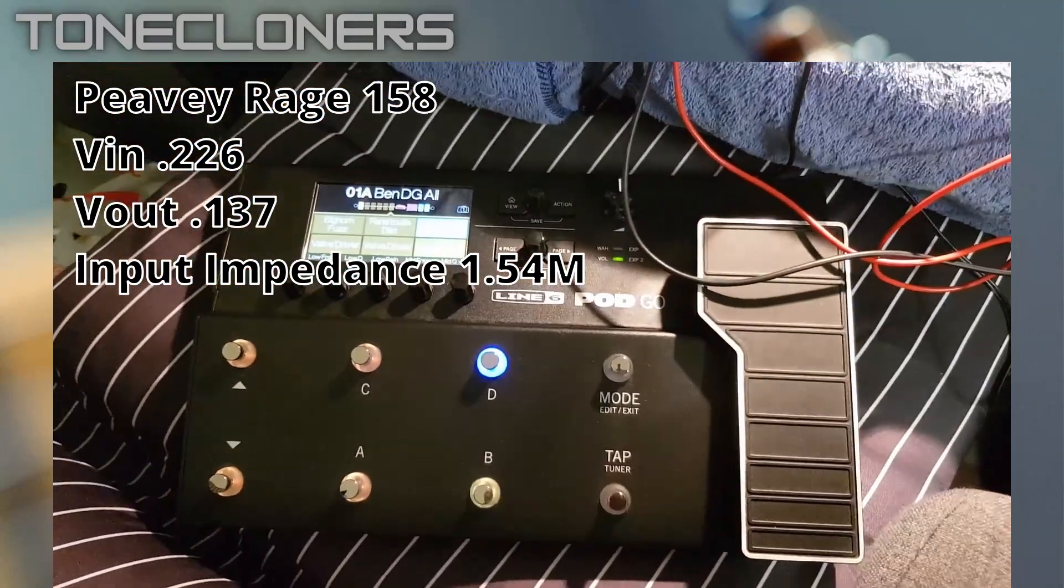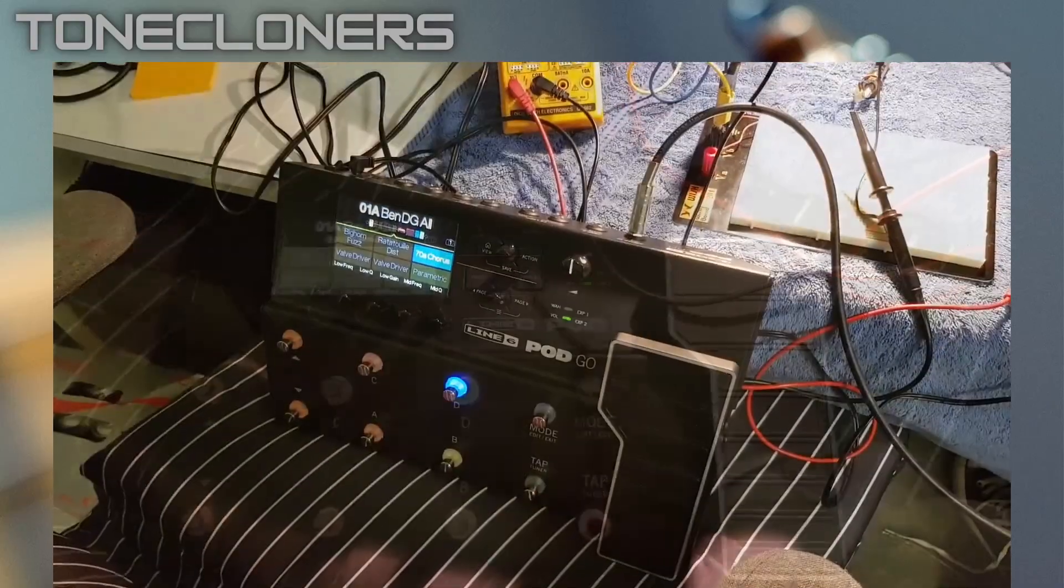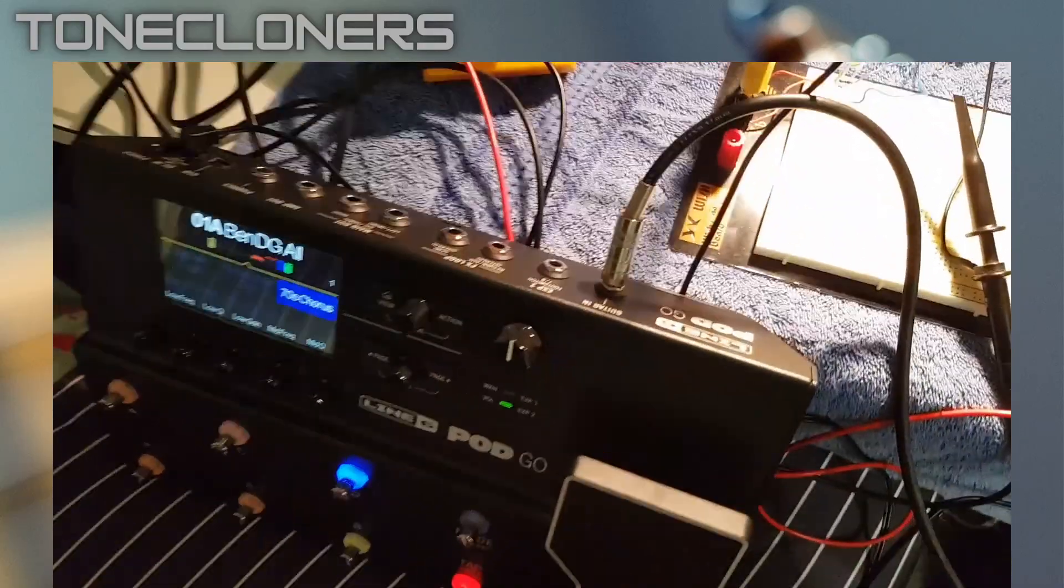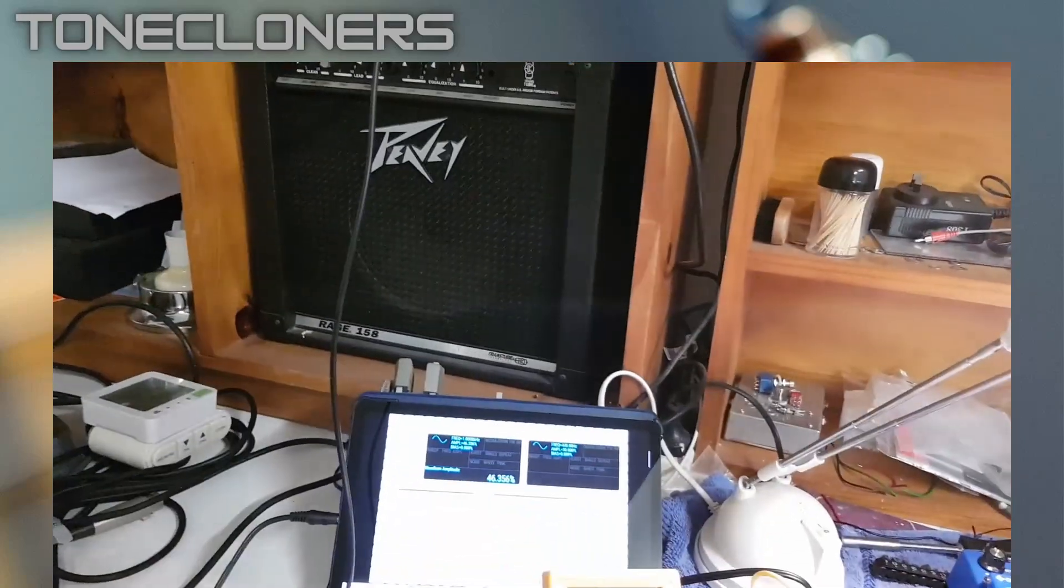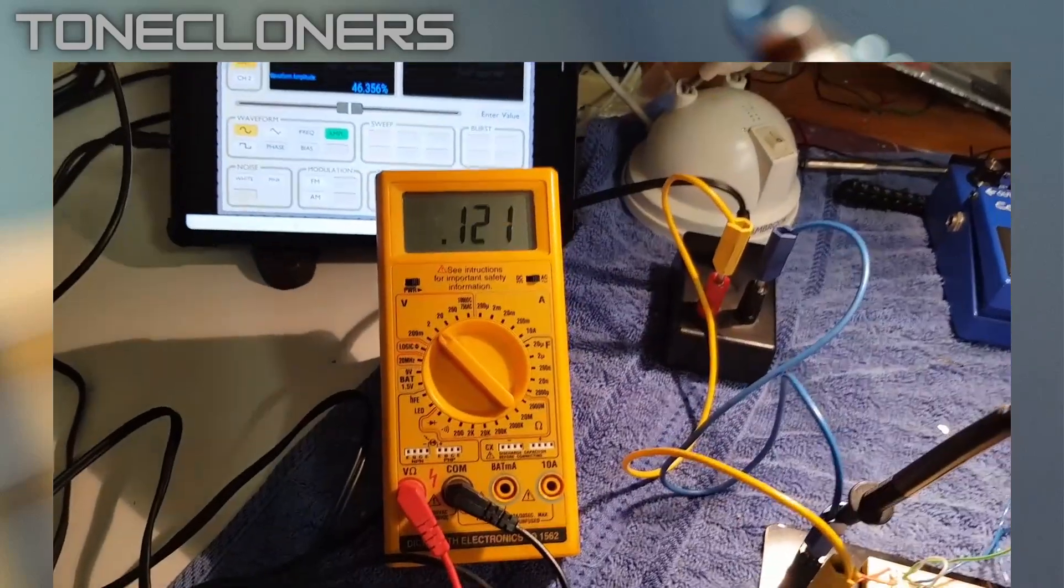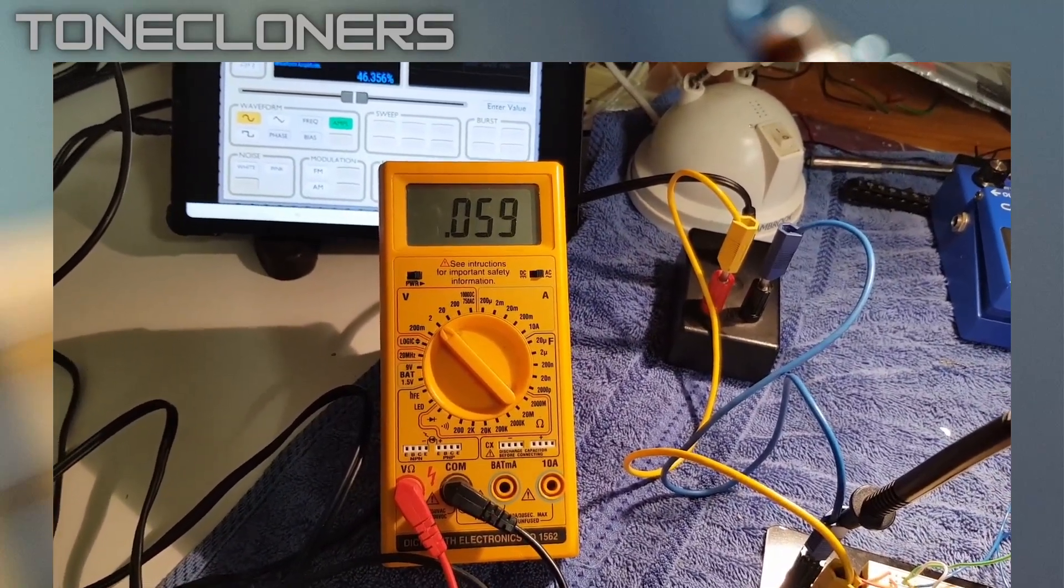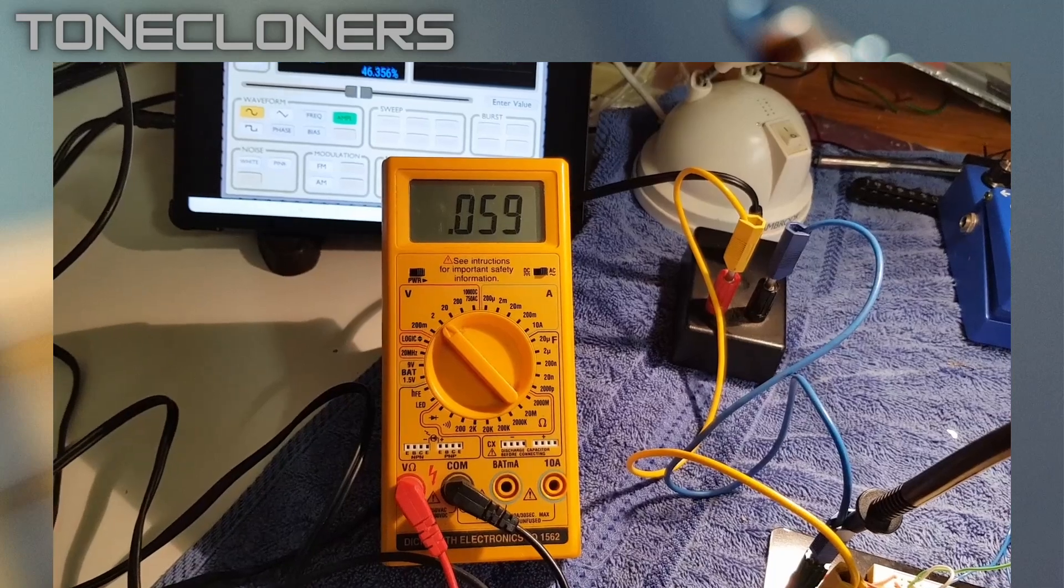Now, the Pod Go. Let's give that a go. All right, we're plugged into the Pod Go. And the voltage reading across that. Right, we're getting about 60 millivolts.